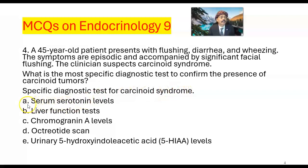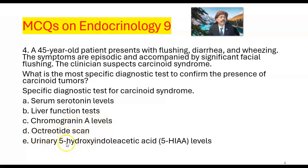The choices are: A. Serum cotinine level, B. Liver function test, C. Chromogranin A levels, D. Octreotide scan, E. Urinary 5-hydroxyindoleacetic acid (5-HIAA) levels. For carcinoid tumor, the answer should be E.